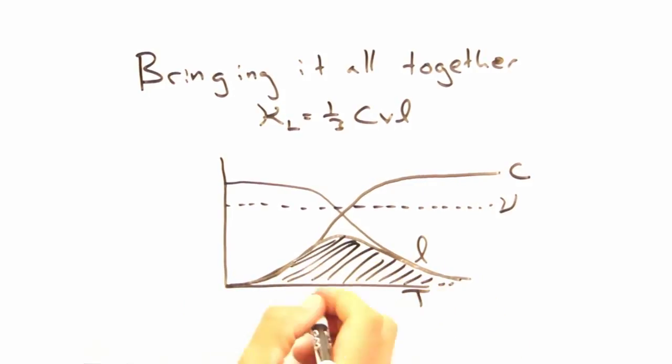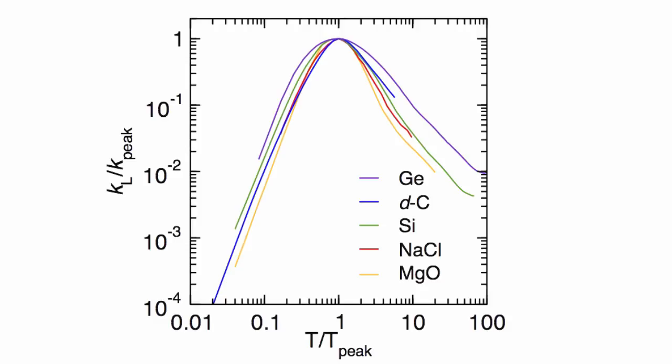This is all well and good, Eric, but how does this compare to real-world materials? Yeah, so let's take a look at this figure. What you see here is that each material has a peak in thermal conductivity, just like we've generally predicted from the scattering theory discussion above.